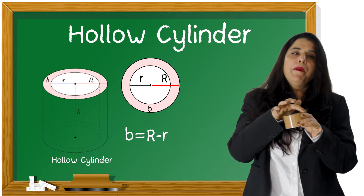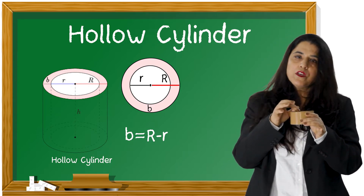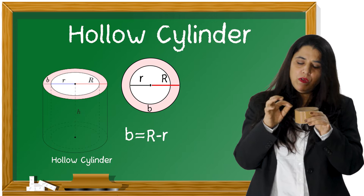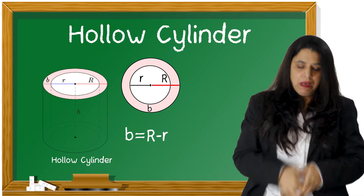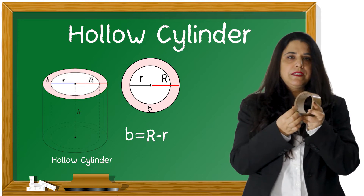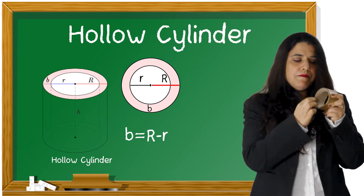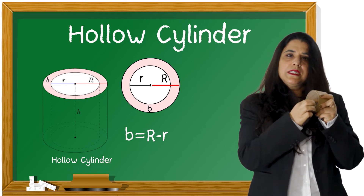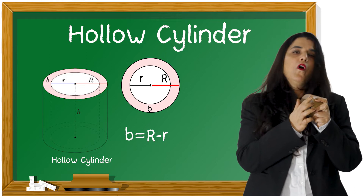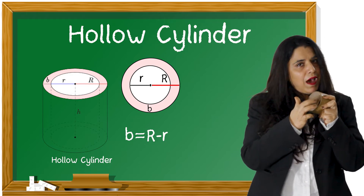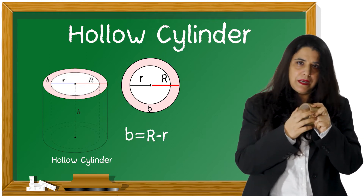Now when I talk about the thickness of the cylinder, what will it be? It will be capital R — that means the radius of the outer circle minus the radius of the inner circle will give you the thickness of the cylinder. So thickness is capital R minus small r.